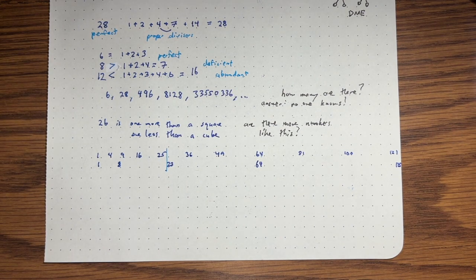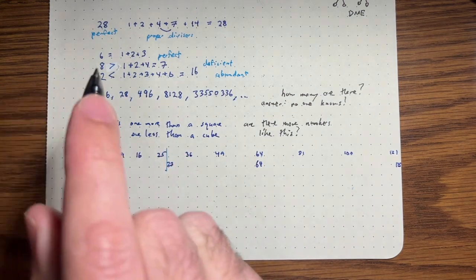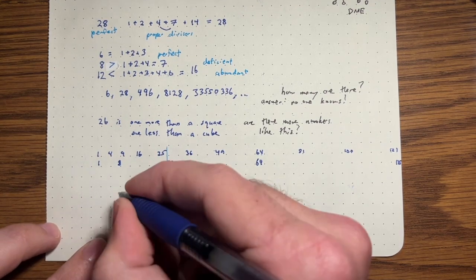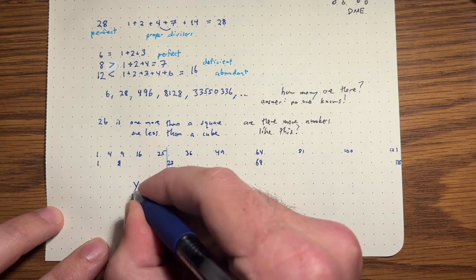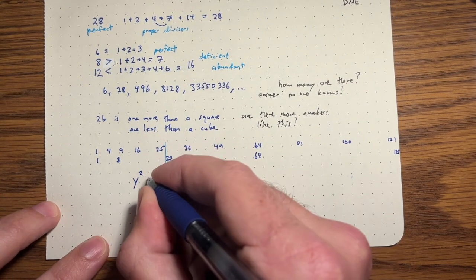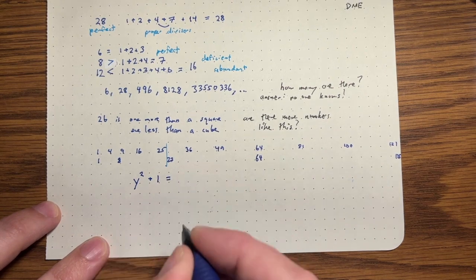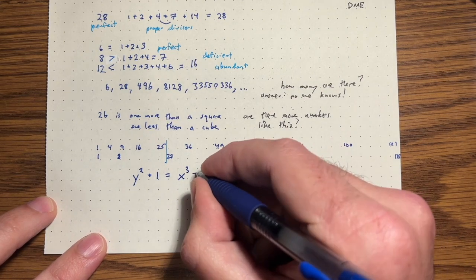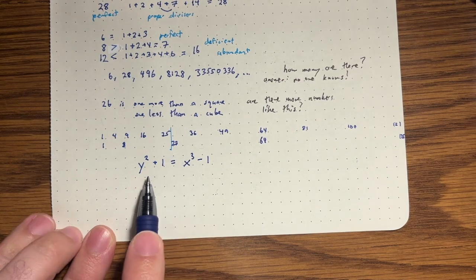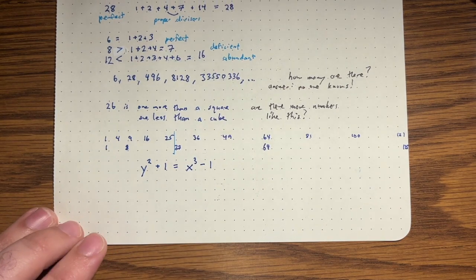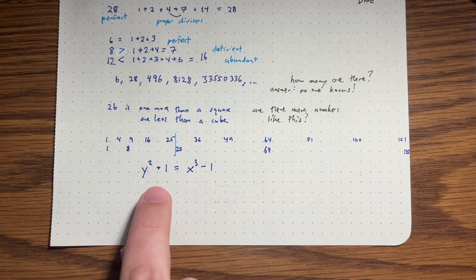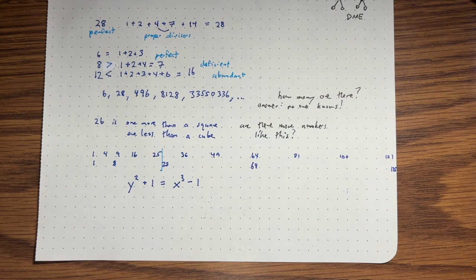Well, the first attempt would be to do something like this. So let's say we have a number like 26. That's one more than a square, but I don't know which square. I'm just going to call it Y. So Y is a number that when I square it and I add one, I get something that is also one less than a cube, but I don't know what that cube is. So I'll just call it X cubed. It's a cube of some number X arbitrary number. So one more than a square is one less than a cube.